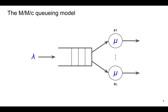This is a diagram of the MMC queue model showing the arrivals — the arrival rate lambda — with customers arriving and joining the queue. We have c different servers, each with a service rate of mu. Because there's a single queue, a waiting customer will receive service from whichever server becomes free.